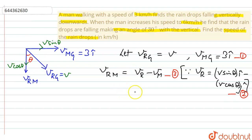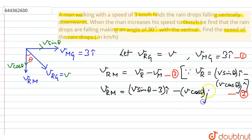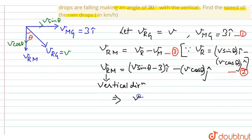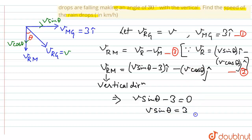Putting the values of equations 1 and 2 into equation 3, I get v_rm equals (v sine theta minus 3) i-cap minus v cos theta j-cap. But since the rain is always falling in the vertical direction as seen by the man, the horizontal component must be zero. So v sine theta minus 3 equals 0, giving us v sine theta equals 3. Mark this as equation number 4.